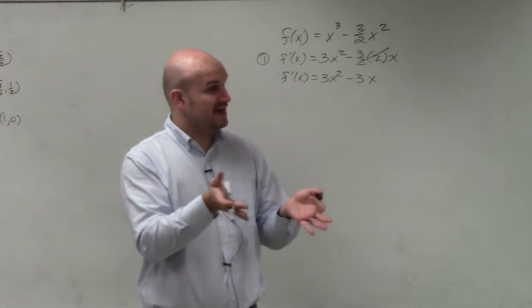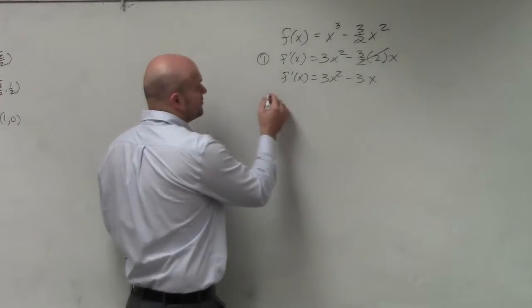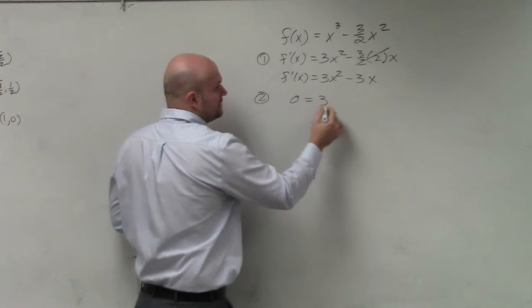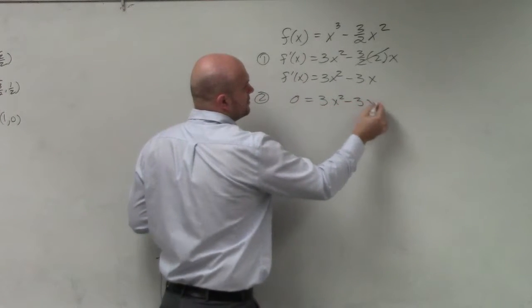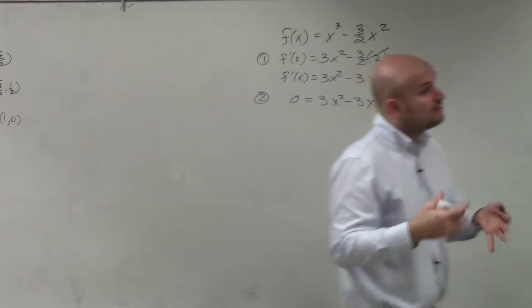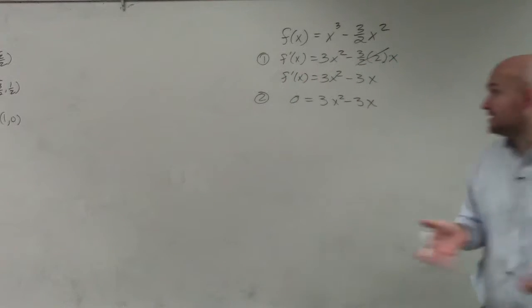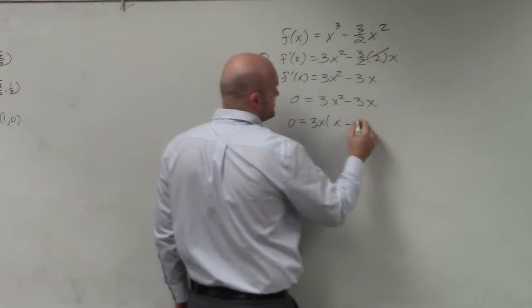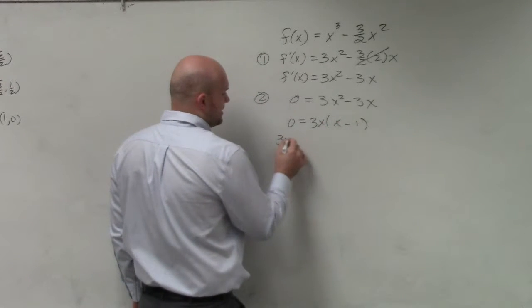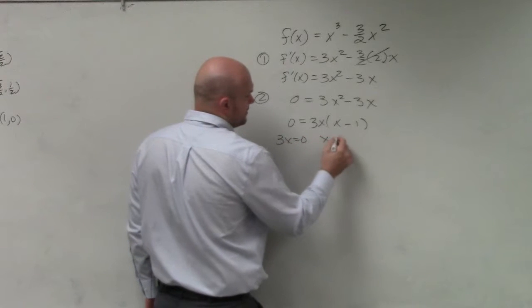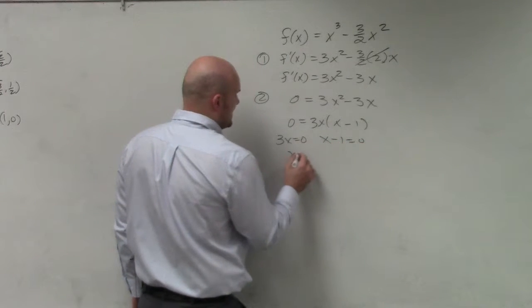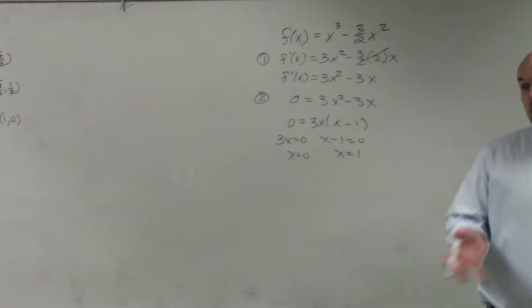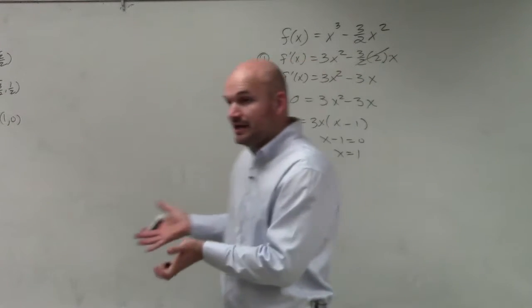Now step number two, we want to find these critical values. So critical values, all we're going to do is set our derivative equal to 0 and we need to solve. We see this is a quadratic, so we're going to want to use our factoring technique. 0 equals 3x times x minus 1. So by applying the zero product property, x equals 0 and x equals 1. So those are our critical values, those are our possible extrema.